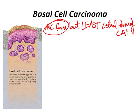Basal cell tumors have palisading nuclei. Basal cell carcinomas develop in the basal cell layer of the skin. Sunlight exposure leads to the formation of thymidine dimers, which damages DNA, leading to basal cell carcinoma. The treatment for basal cell carcinoma is Mohs surgery, spelled M-O-H-S.